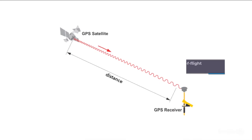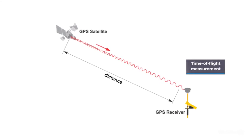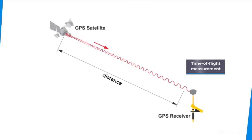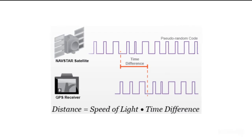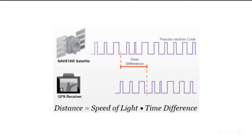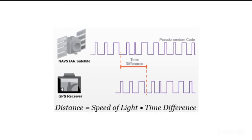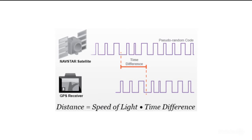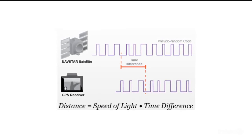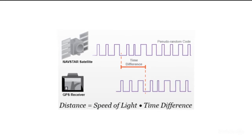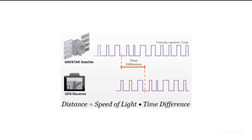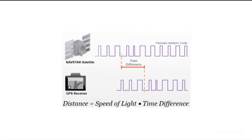When a GPS signal from a satellite is picked up by a GPS receiver on Earth, the receiver is able to calculate its distance from the satellite using time-of-flight measurement. The ranging signal transmitted by the satellite is a digital pattern in the form of a pseudorandom code. This pattern is compared with the same pseudorandom code generated by the receiver. Due to the distance between the satellite and the receiver, there is a time delay between both patterns. The time delay equals the signal's travel time, and since radio waves travel at the speed of light, the distance is calculated by multiplying this time difference by the speed of light, which is about 300 million meters per second.